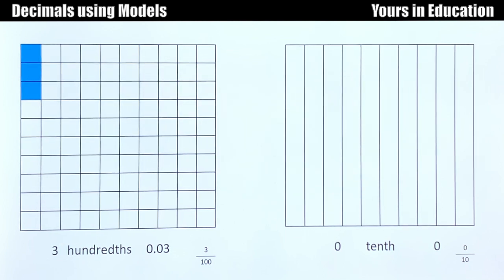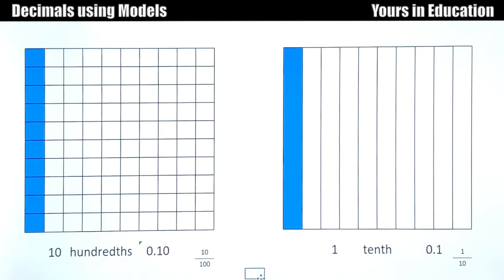What's next? Now we have 3 hundredths. In decimal it's 0.03, and in fraction is 3 out of 100. Four hundredths, five hundredths, six hundredths, nine hundredths. What do you notice about these two models?